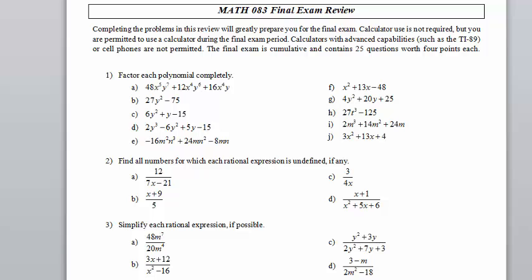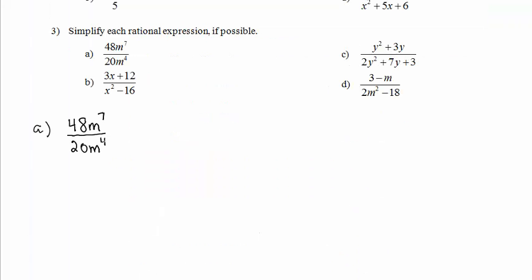Math 083 Final Exam Review, Problem 3, Parts A and D. To simplify a rational expression, it must be in factored form. In other words, all of the pieces must be multiplied and or divided together.